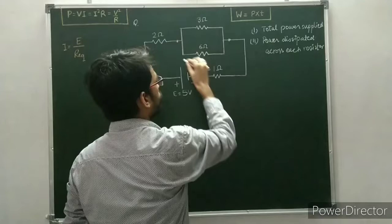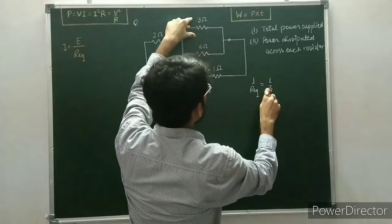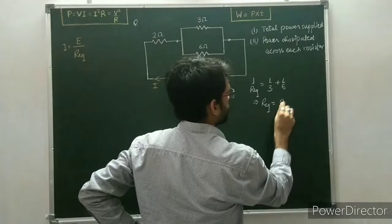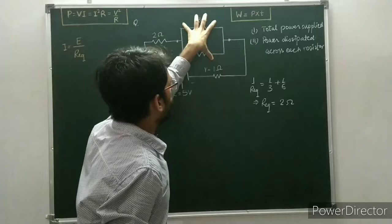To find the total equivalent resistance, first find the equivalent of the parallel combination. The equivalent resistance of the parallel combination is given by: 1/R_eq = 1/3 + 1/6, which comes out to be 2 ohm. So this parallel combination has an equivalent resistance of 2 ohm, and this is connected in series with 2 ohm.